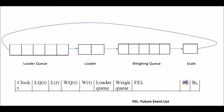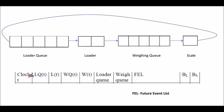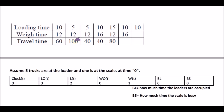The table columns we need to fill at each step are: the clock instance t; LQ(t), the number of trucks in the loader queue; L(t), trucks in the loader; WQ(t), trucks in the weighing queue; W(t), trucks being weighed; truck numbers in the loader queue; truck numbers in the weighing queue; the future event list; and finally BL (loader busy time) and BS (scale busy time). Now, from the question, at time zero one truck is at the scale, so W(0) = 1.